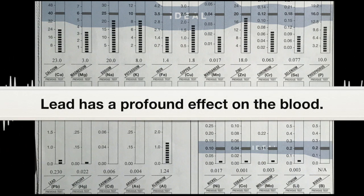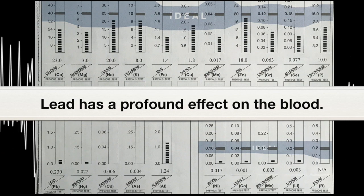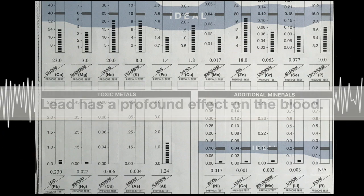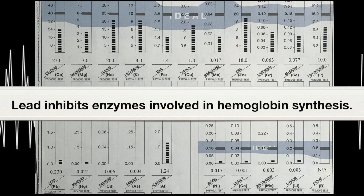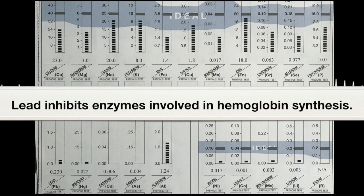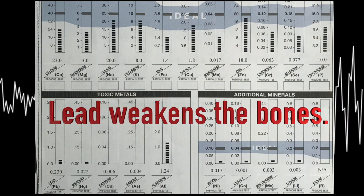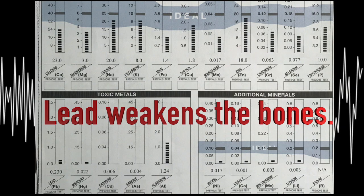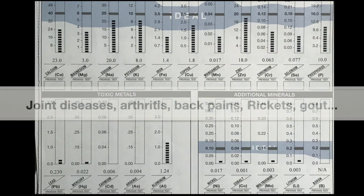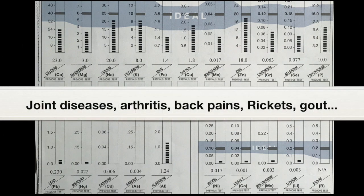Now, lead has a profound effect on the blood. It impedes one of the zinc enzymes. Remember we said lead displaces zinc. Zinc is needed for the porphine ring in making our blood. And so it really inhibits the enzymes involved in hemoglobin synthesis. Lead weakens the bones, because lead displaces the calcium. And so when we think of the bones, that can be our garden variety, degenerative joint diseases. So our arthritis, our rheumatoids, our back pains, our rickets, our gout, are all associated with lead toxicity affecting the musculoskeletal system.